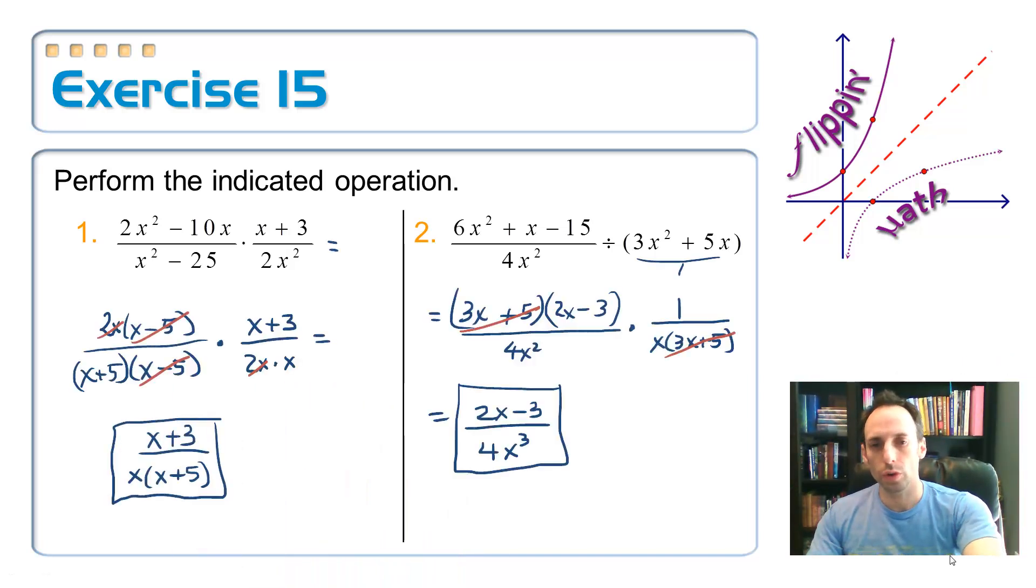Let's see. Were these your answers? Let's hope so. Over there on the first one, number one, factor top and bottom. Cancel it out. x minus 5. So that was the obvious part.